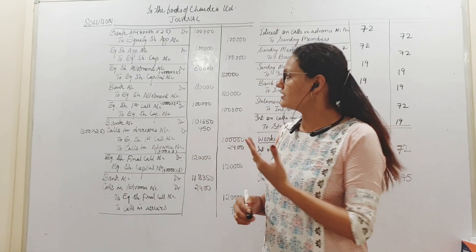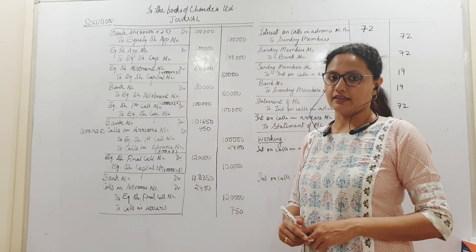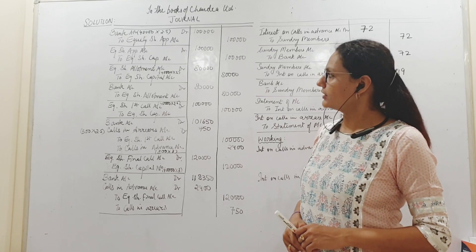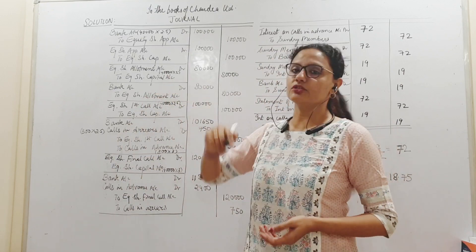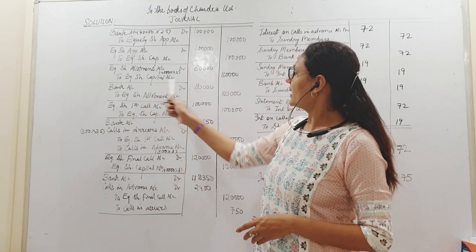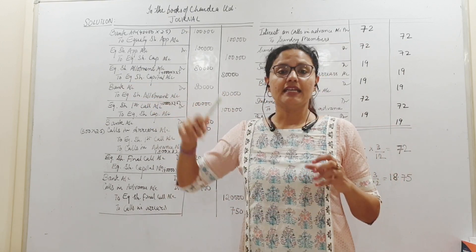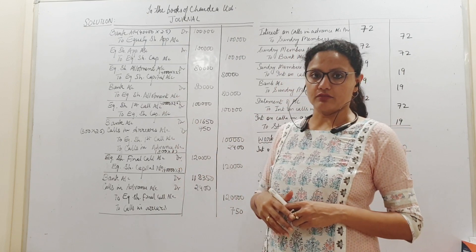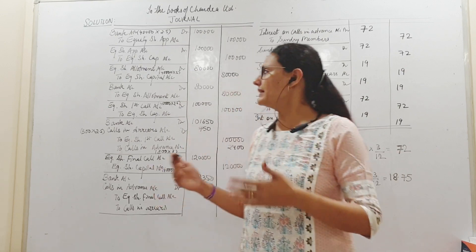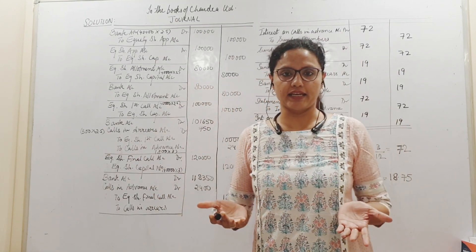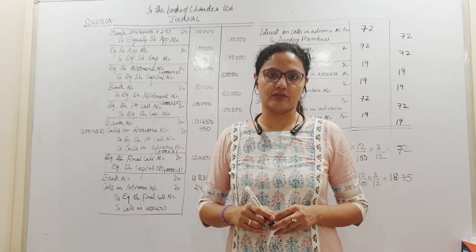Next, the installment due was allotment. On allotment, 2 rupees per share on 40,000 shares — that is 80,000 is due, credited to share capital. There is no advance or arrears at the time of allotment, so bank account debit to equity share allotment account — 80,000.